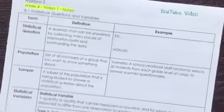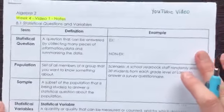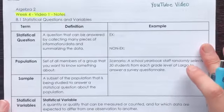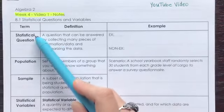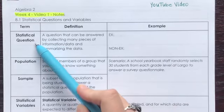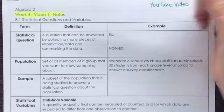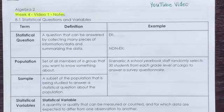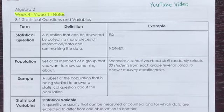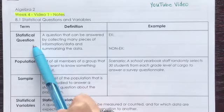So we're going to go ahead and get ourselves started on chapter eight. The first thing we're going to define is: what is a statistical question? A statistical question is a question that can be answered by collecting many pieces of information and data, and then summarizing that data in some way. You do have to collect, analyze, and then summarize the data in order for it to be a statistical question.